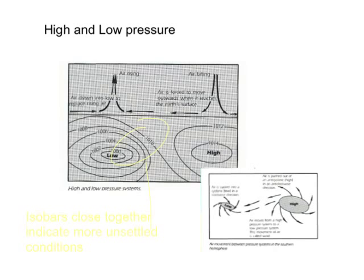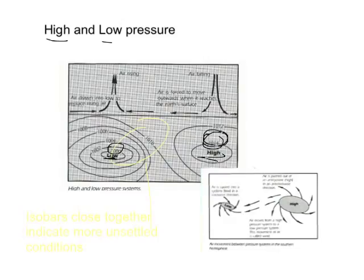The big thing you need to look at is these isobars, and depending on the values of them you'll have two different pressure systems — either high or low. The easiest way to remember this: if the number in the middle is largest, it's a high, and if the number in the middle is smallest, it's a low. So if the values are going down towards the centre, you've got a low pressure system, and if they're going up, you've got a high pressure system.